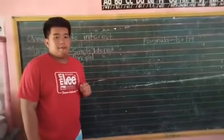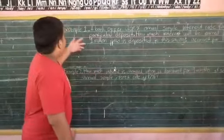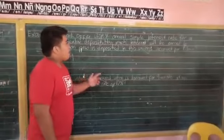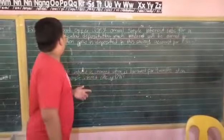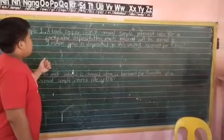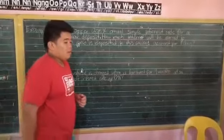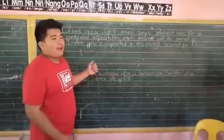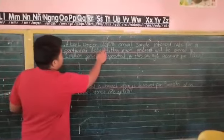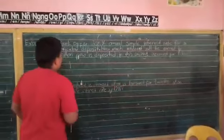So we have three examples. Example number one: a bank offers 0.35% annual simple interest rate for a particular deposit. How much interest will be earned if 1 million pesos is deposited in this savings account for 1 day? So in this question, we have to find the simple interest. We have 0.25% which is our rate.